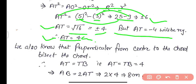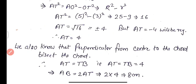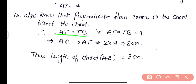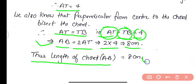The perpendicular from the center to the chord bisects the chord, so AT = TB = 4 centimeters. Therefore AB = 2 × AT = 2 × 4 = 8 centimeters. The length of the required chord AB is 8 centimeters. This is all about Question 7.